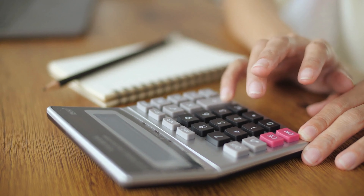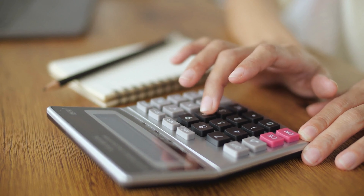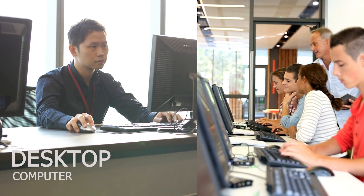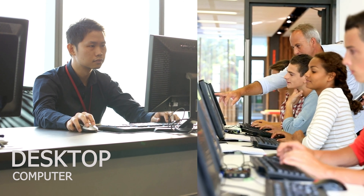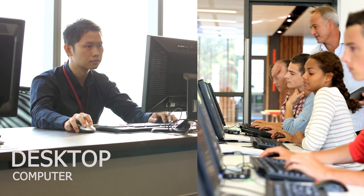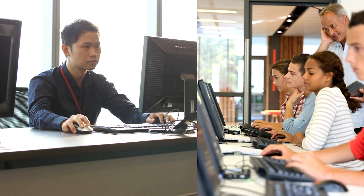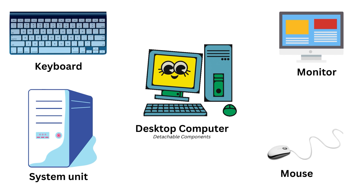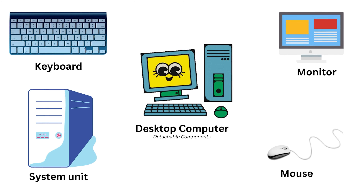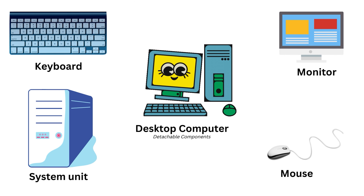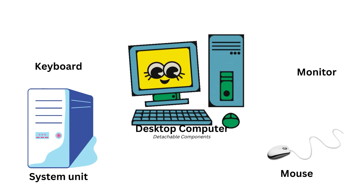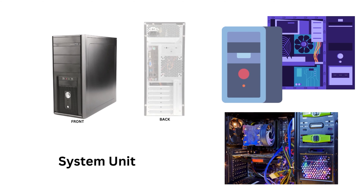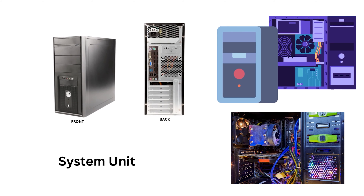The intended location for desktop PCs is a desk or table. Compared to other forms of personal computers, they are typically bigger and stronger. Detachable components make up desktop computers. The system unit is the primary component; it usually has a rectangular shape and rests on or below a desk.